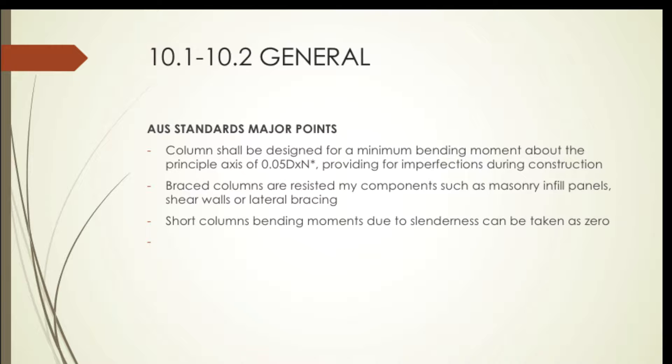The column shall be designed for minimum bending moment about the principal axes of 0.05D, so looking at both directions of the column or both axes multiplied by the applied force. This covers any imperfections that are likely to happen at some stage during construction.